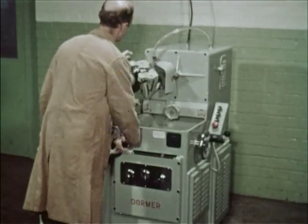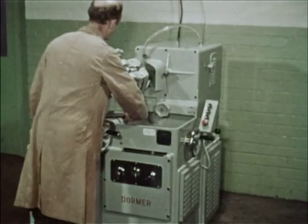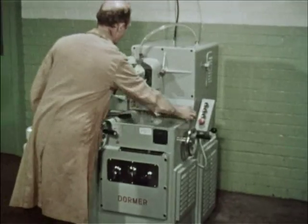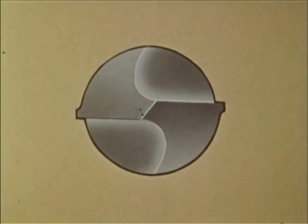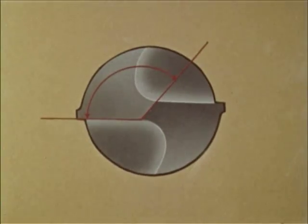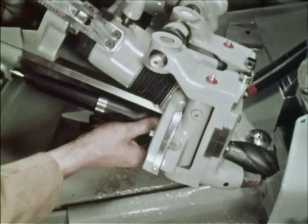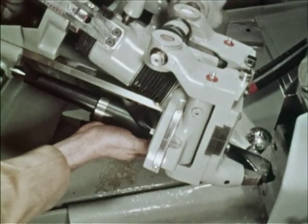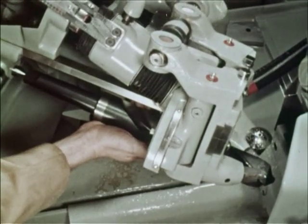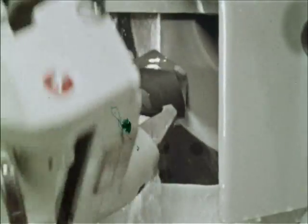This Dormer drill sharpening machine automatically produces a perfectly balanced point. A chisel angle of 120 to 130 degrees will ensure efficient entry into the work and minimise peripheral wear. Too great an angle will result in drill wander and bell-mouthed holes. Too small an angle will make the chisel and therefore the drill ineffective.